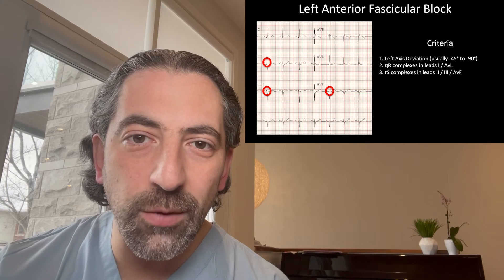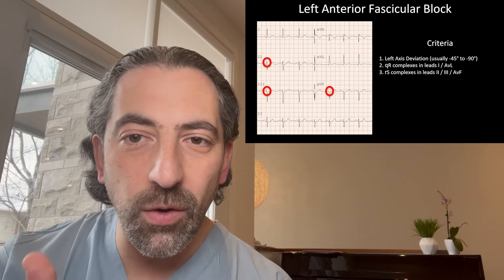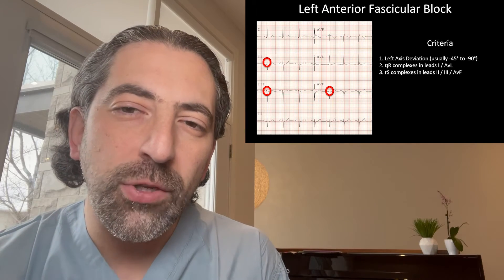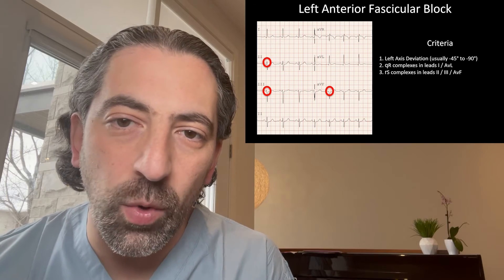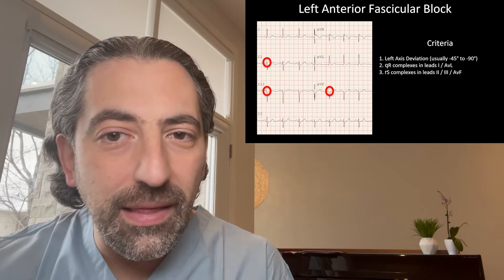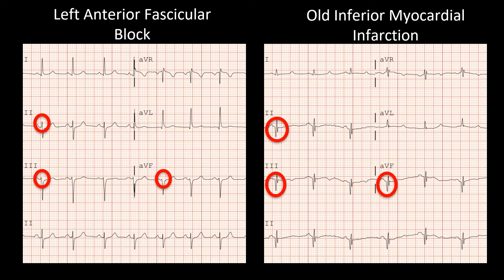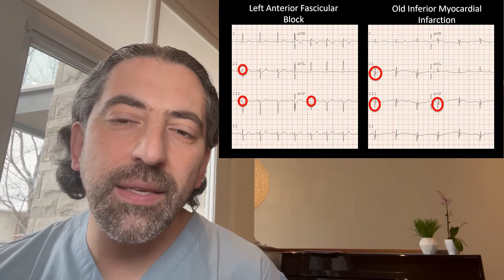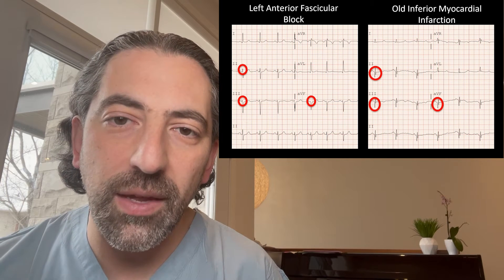It's very important to distinguish left anterior fascicle block from another common cause of left axis deviation, which is an inferior wall myocardial infarction. If the inferior wall is infarcted, there is scarring of the bottom part of the heart, which reduces electrical forces going toward the inferior wall, creating Q waves or absence of the R wave in the inferior leads — specifically Q waves in leads 2, 3, and AVF with no initial R deflection. This is why a small R wave in leads 2, 3, and AVF is important: in an inferior infarct, which can also cause left axis deviation, that small R wave does not exist and you begin with a Q wave.